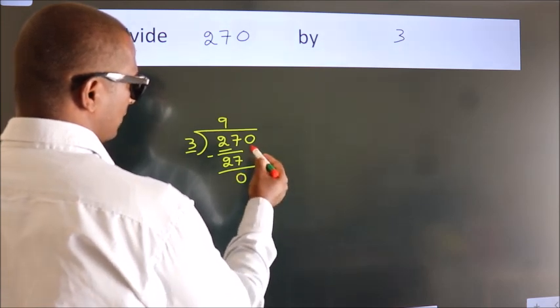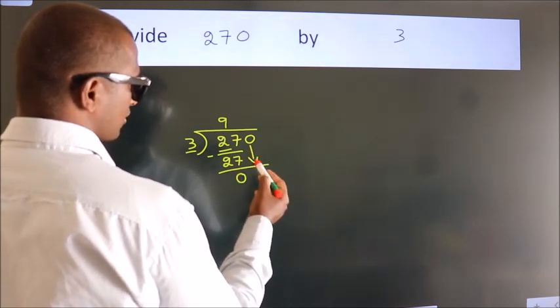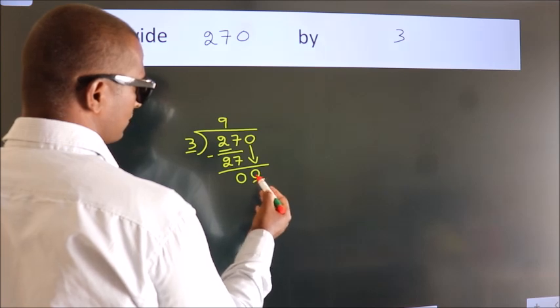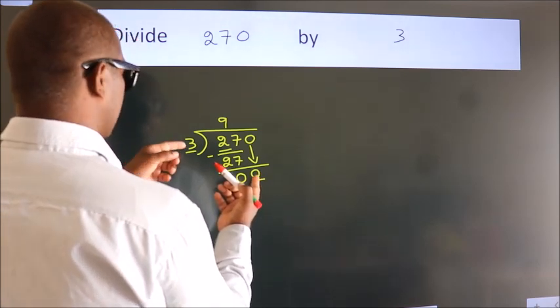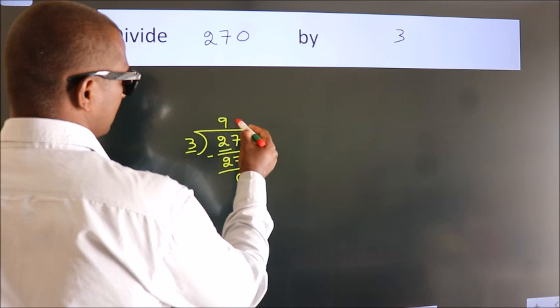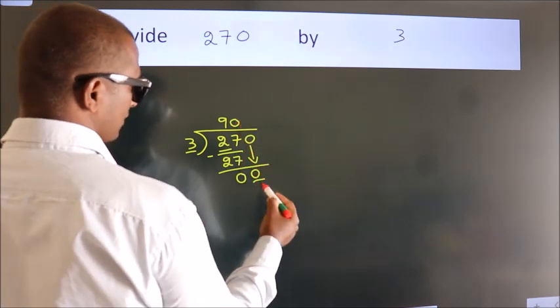After this, bring down the beside number. So, 0 down. So, 0. When do we get 0? In 3 table. 3 times 0. 0.